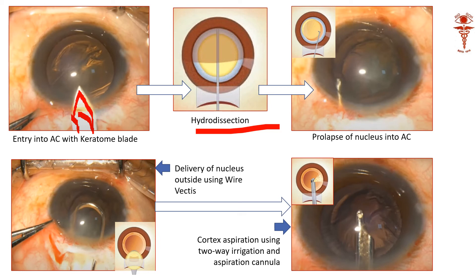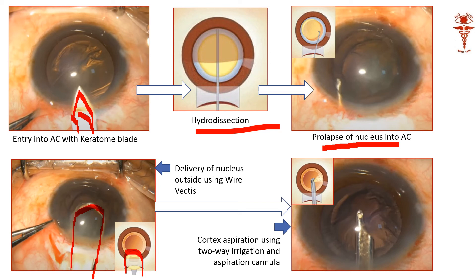Once hydrodissection is done, the nucleus can be rotated and prolapsed into the anterior chamber — it is now separated and free. Once the nucleus is prolapsed into the anterior chamber, we use an instrument called a vectus. There are two types: an irrigating vectus and a rigid vectus. This vectus instrument is used to engage the nucleus and express it out of the main wound.